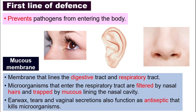Earwax, tears, and vaginal secretions also function as antiseptics, meaning they can kill these microorganisms. So this first line of defense — their job is to prevent, to make sure that no pathogens get into our body.